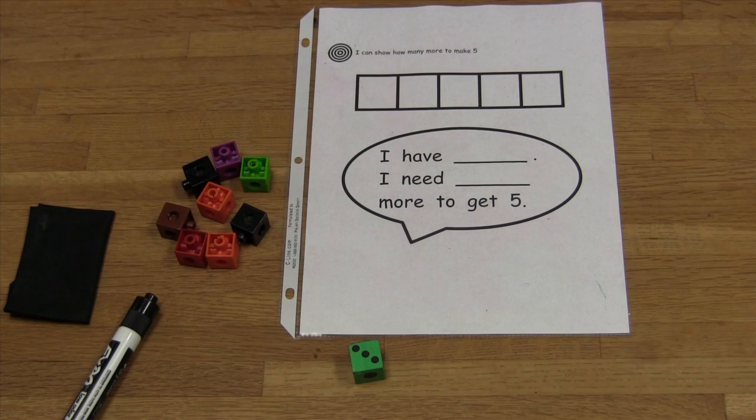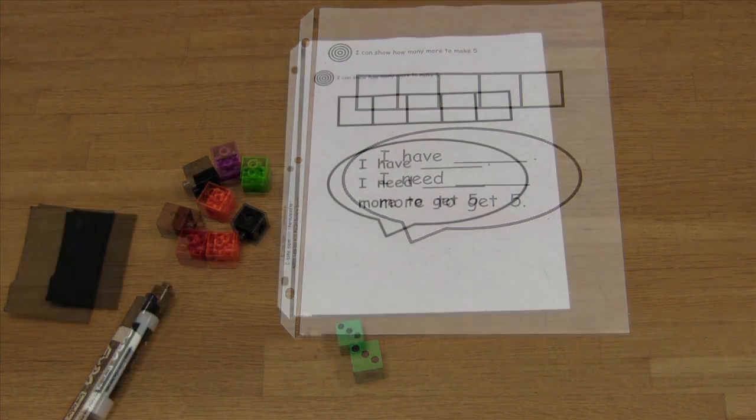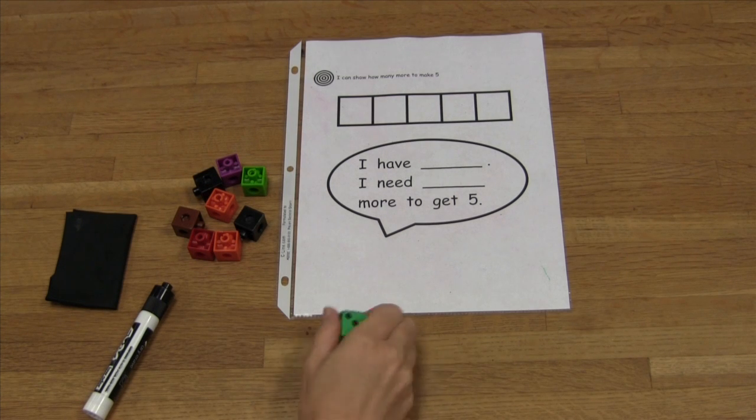For this activity you will need the five frame page and a page protector, a die marked 0 through 5, manipulatives, a whiteboard marker, and an eraser. Begin by rolling the die.